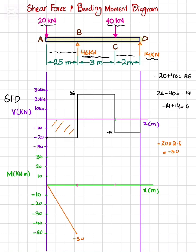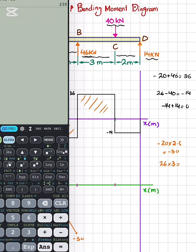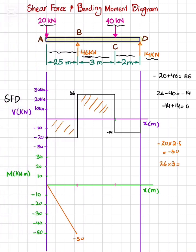The second area under the shear force diagram is equal to 26 multiplied by 3, which gives you 78. So minus 50 plus 78 is plus 28. So the bending moment will give you a plus 28 at this point.